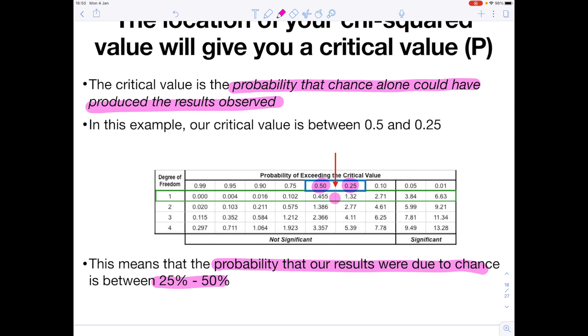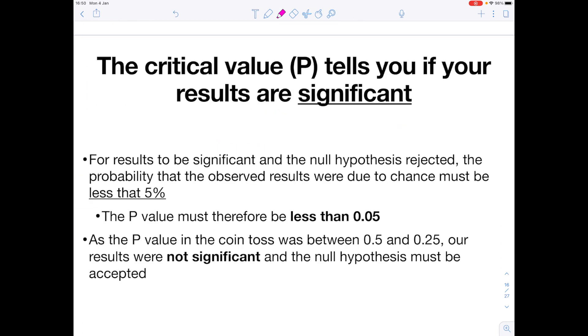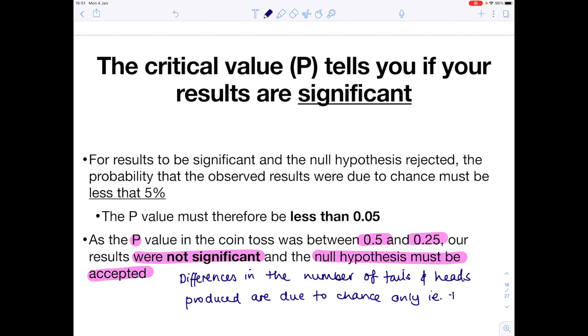And that's what these numbers here tell us. So 1 falling in this position tells us that the probability that our results were due to chance stands between 25% and 50%. Because our P value was between 0.5 and 0.25, we know that our results were not significant. And so therefore, the null hypothesis must be accepted. We're saying that differences in the number of tails and heads produced are due to chance only, i.e. the coin is not biased. Therefore, the null hypothesis is accepted.